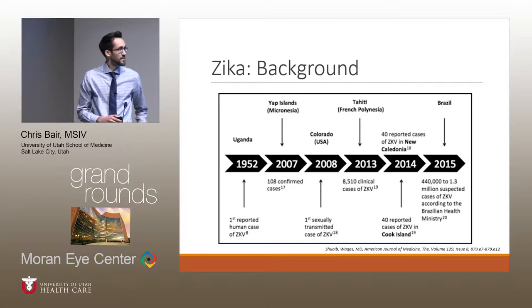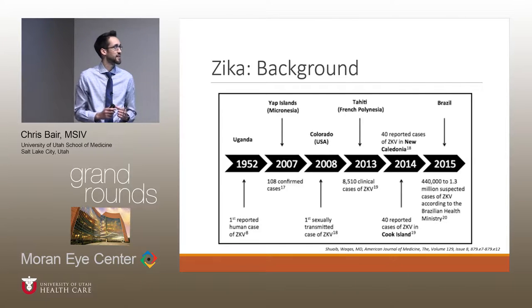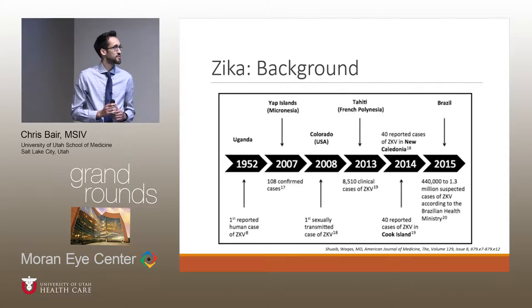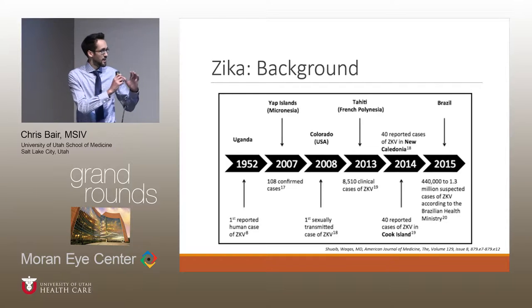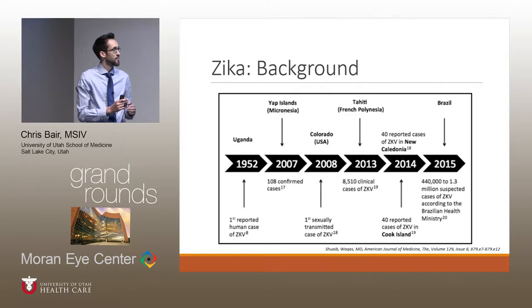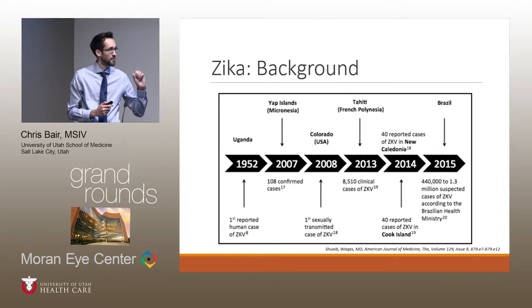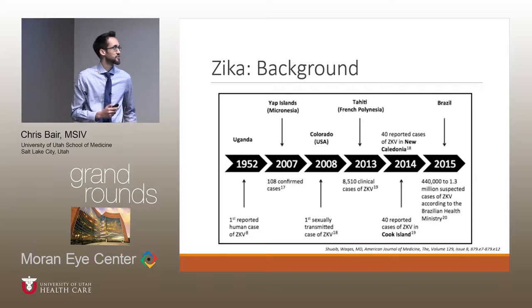This slide shows the timeline of what we know about Zika virus. The first case was reported in 1952, and then we had a period of almost 60 years where it was really pretty quiet. In 2007 we had our first outbreak, in 2013 a second outbreak, and now in 2015 we have an outbreak in Brazil that we all know about. There's something different about this strain of Zika virus — why would we have relative quiet for 60 years and then three major outbreaks within the past 10 years?